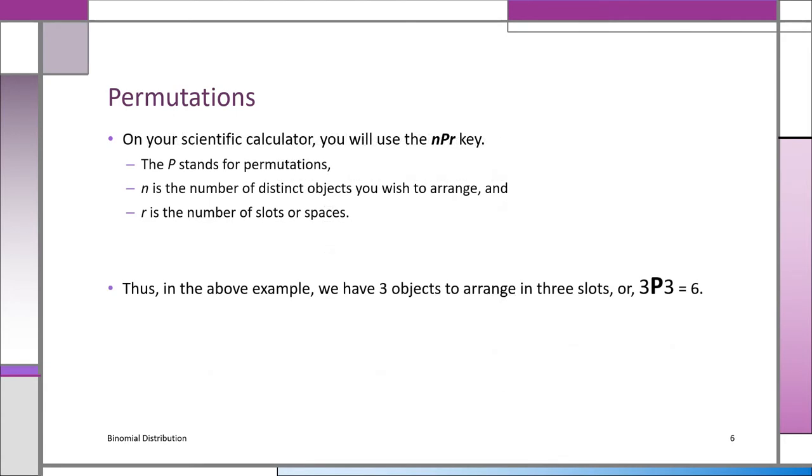When you do this in your calculator, you'll see a key that has N, P, R. The P stands for permutations. Usually, it's together with the N, C, R key. One will be the first function, one will be the second function. They'll both be on your calculator. It's got to be a scientific calculator. P stands for permutations. N is the number of distinct objects you want to arrange. And R is the number of slots or spaces.